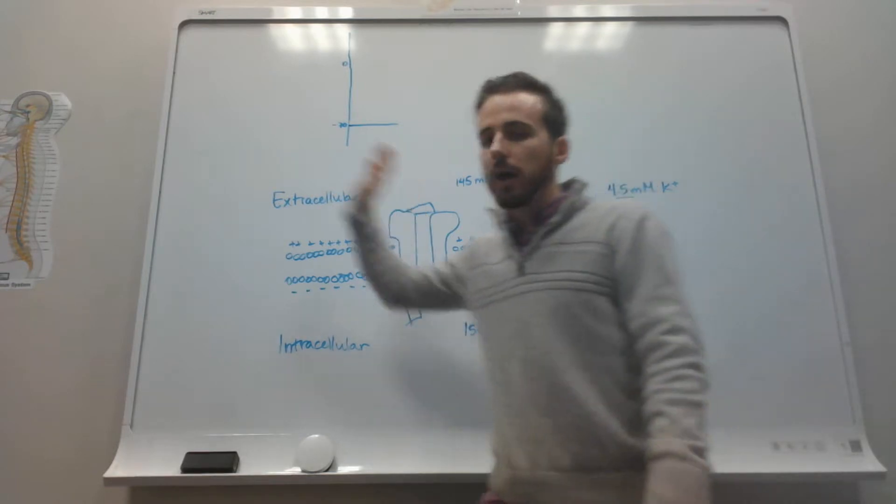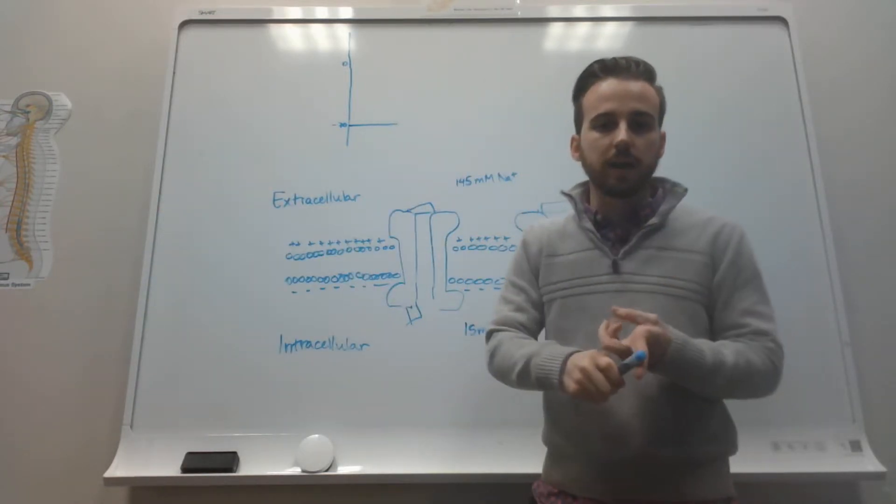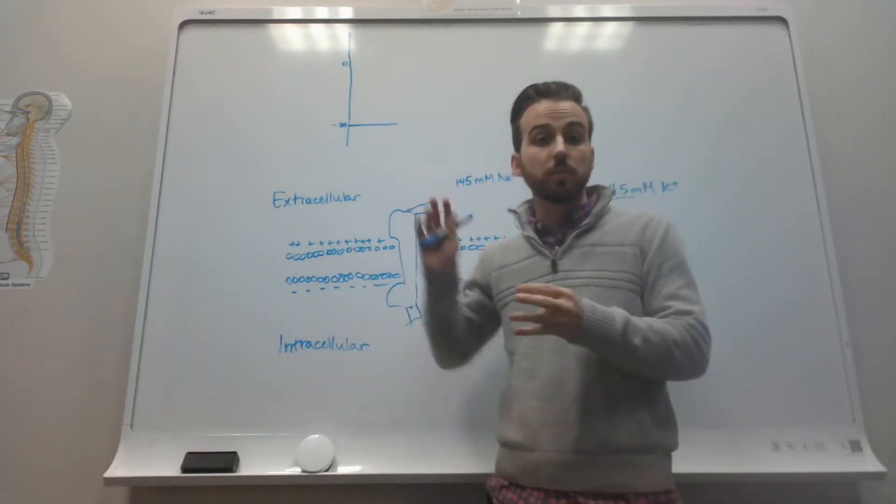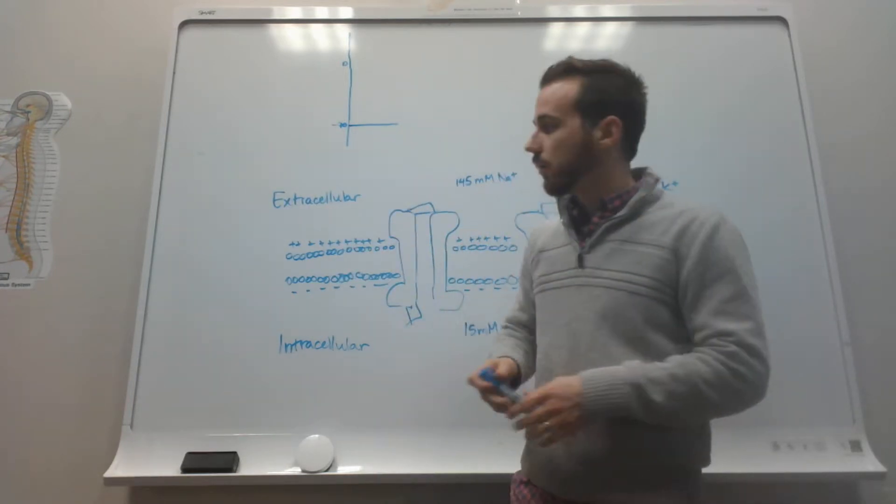Before we start with the action potential, upstream somewhere, there was a signal. It could be a ligand-gated channel, a mechanical-gated channel, a voltage-gated channel, it could be trauma—anything that allows positive ions to flow into the cell.